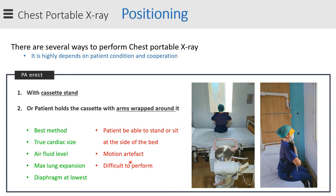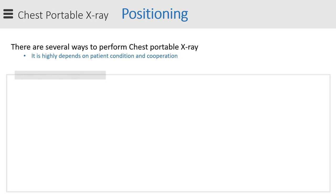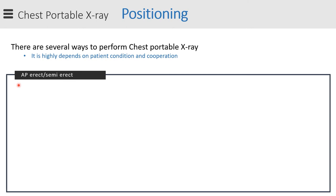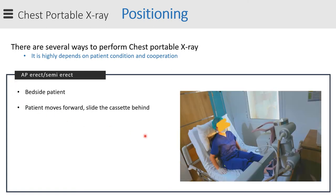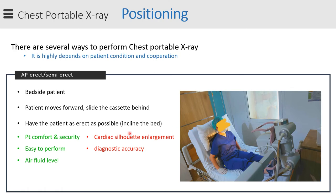However, as mentioned, this method requires patient cooperation, and motion artifact risk increases, making it sometimes difficult to perform. The second method is AP upright or semi-upright, which you can perform for almost all patients. You slide the cassette behind the patient and make the patient as erect as possible by inclining the bed. The benefits are that it's easy to perform, air-fluid levels can still be assessed, and lung expansion with the diaphragm in its lowest position is maintained.